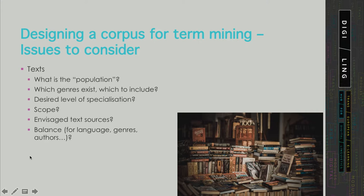The next issue relates to the texts you are going to choose. Think about the population — what texts pertain to your domain of choice, which genres exist, and which you would like to include. In some domains this landscape can be highly varied; for example, in medicine you will find very different text types with different levels of specialization and distinct term usage. It's important to decide which genres are important for you and best suited for terminology mining.